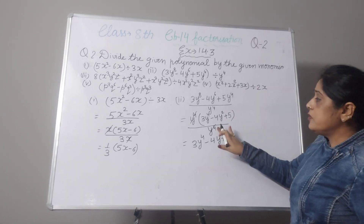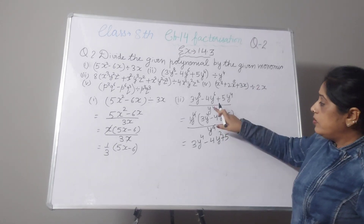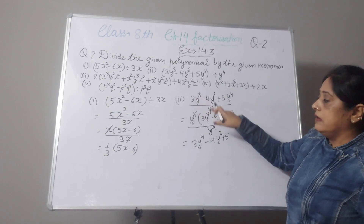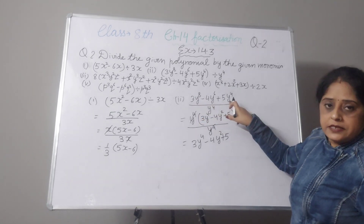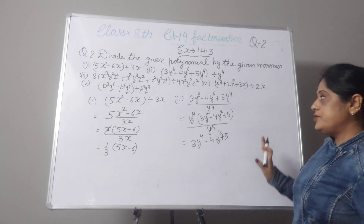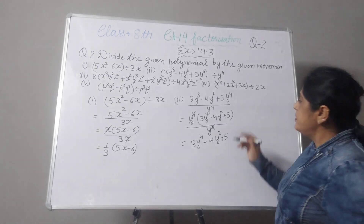Always take common first, then you can cancel. Don't directly cut the monomial across the three terms. First you have to take common. Hope you understood.